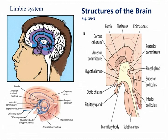The hypothalamus is inferior to the thalamus and in front of the midbrain. It regulates our autonomic nervous system as well as our endocrine function. The thalamus is located directly above the brain stem.